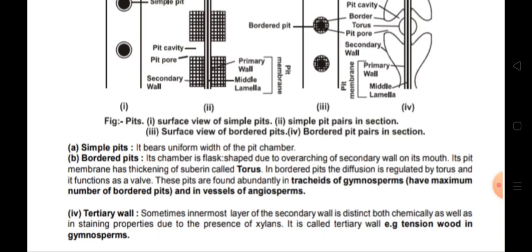Bordered pits are found abundantly in tracheids of gymnosperms, which have the maximum number of bordered pits, and also in vessels of angiosperms. Since tracheids and vessels are responsible for water transportation, these bordered pits in the xylem region regulate water transportation.